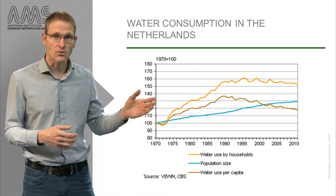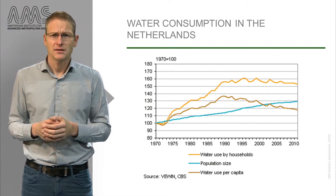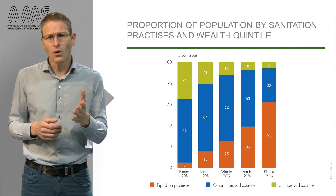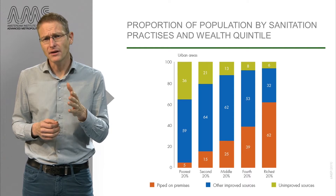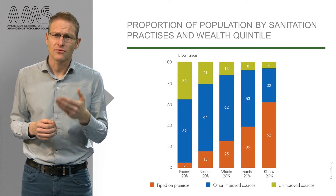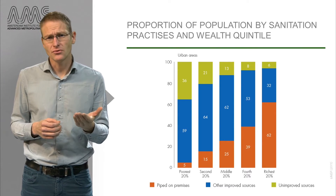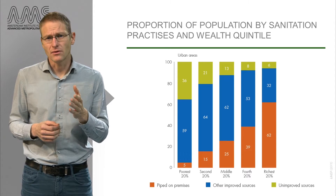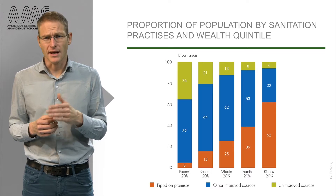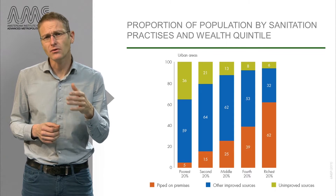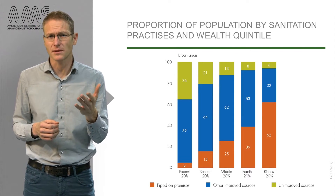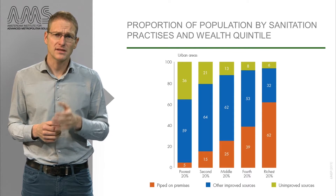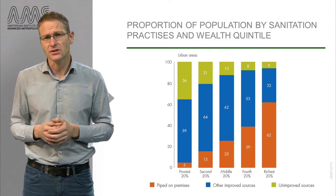As shown in this graph of water consumption since the 1970s in the Netherlands. What can also be observed is that with higher income you're more likely to have access to services and to use more resources. In this picture from the UN you can see the relationship between income and access to water. Only 5% of the poorest in sub-Saharan Africa have access to piped water at home, while 62% of the richest have.